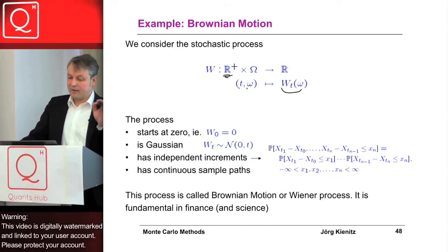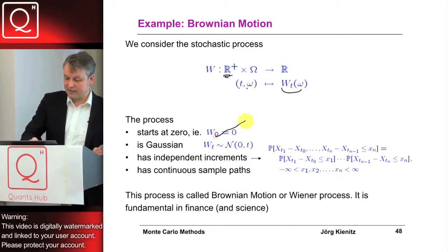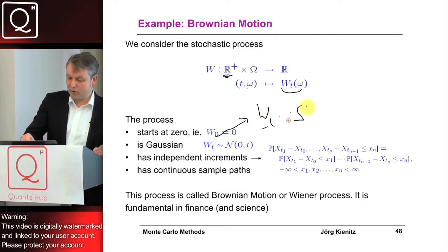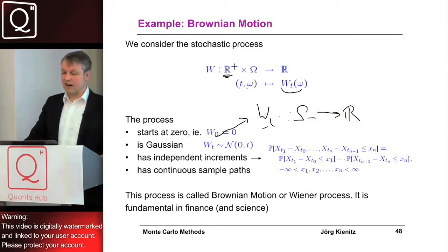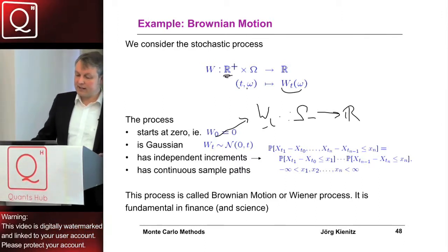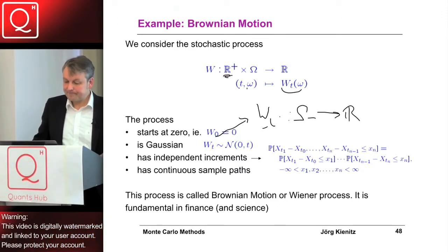In the case of Brownian motion, when we fix T and have this function from omega to R, this is a Gaussian distributed random variable. Further technical things: